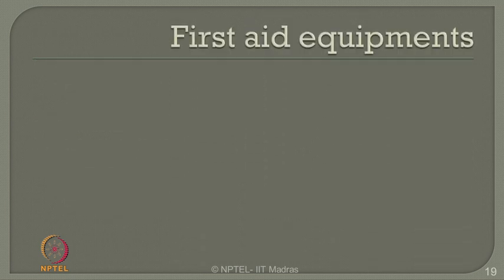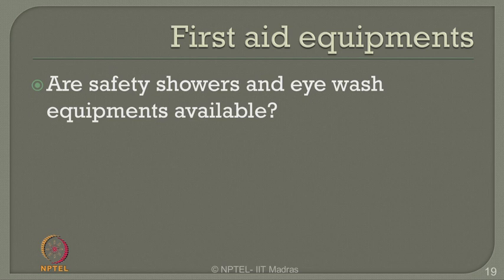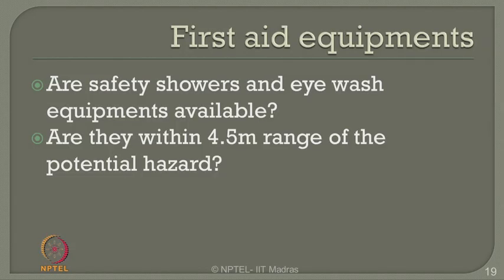Post-accidents can be mitigated if you have first aid equipment, safety showers, and eye wash equipment in place. In case of reduced visibility and increased eye irritation, people become panicked. Eye wash equipment and safety showers should be available to protect and prevent first-level burns. These facilities must be available as first aid equipment in your plant, within a range of about 4 to 4.5 meters of the potential hazard. You should not have to search for them.